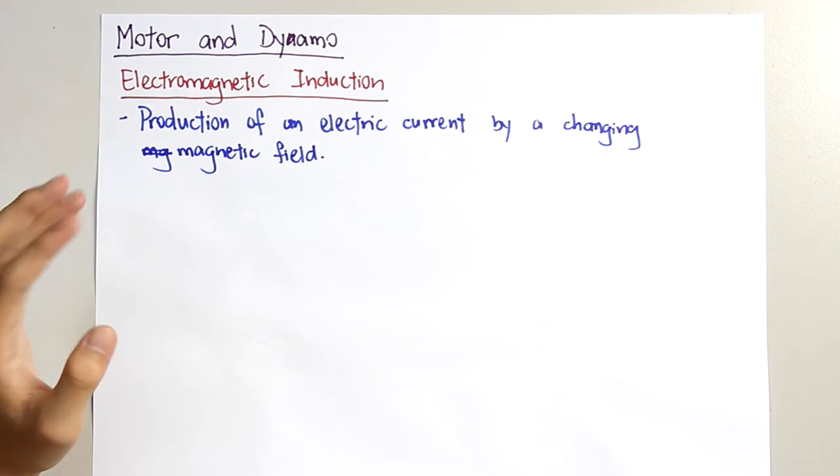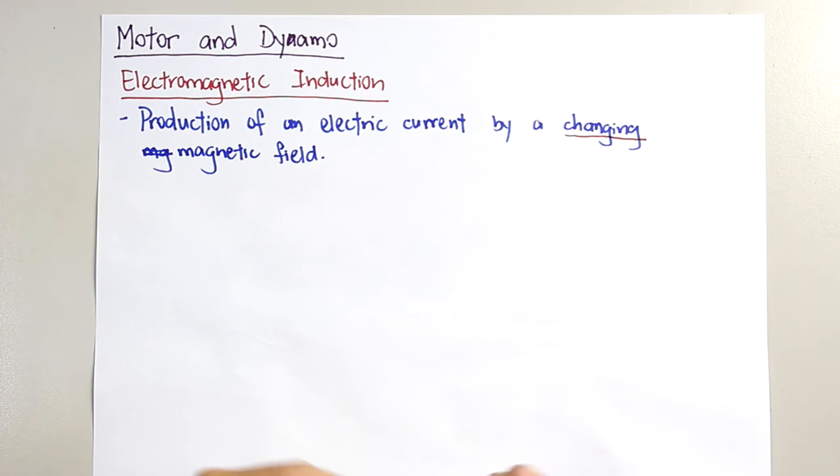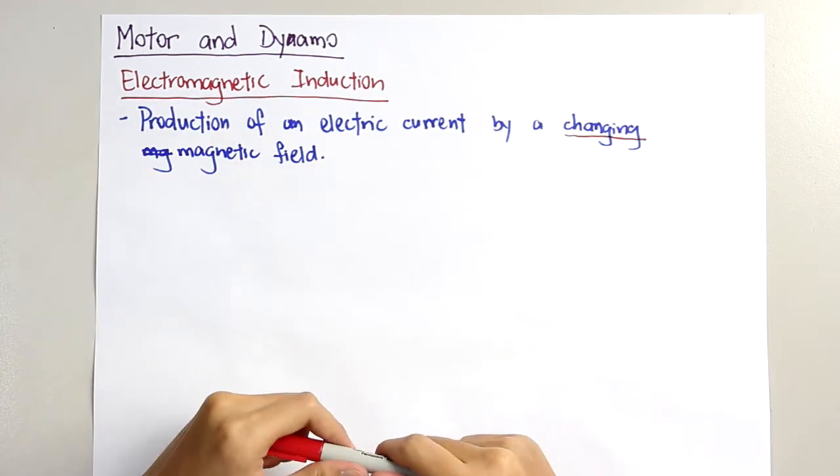So you have to notice the word changing. It must be changing so that electrical current can be produced.